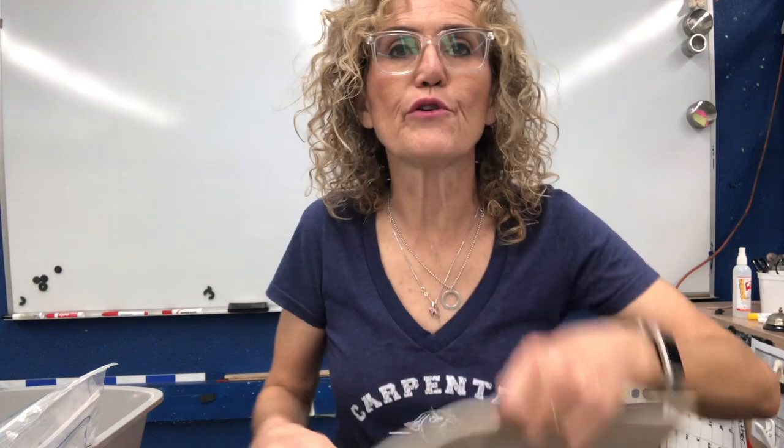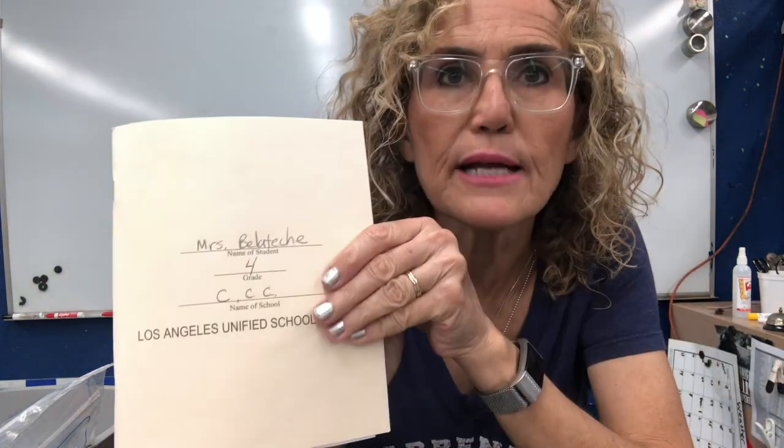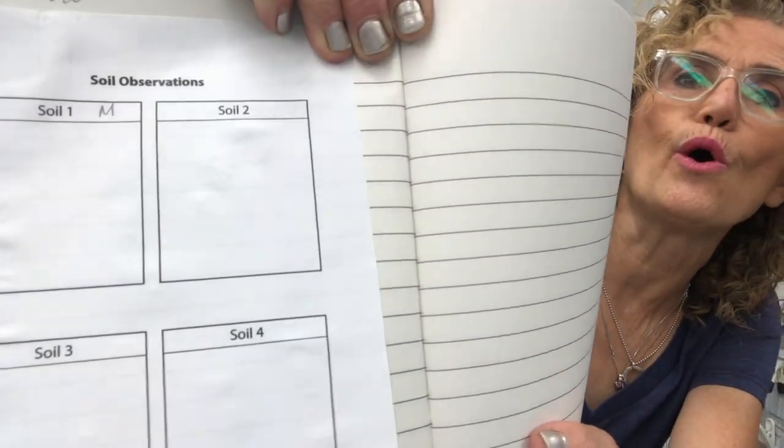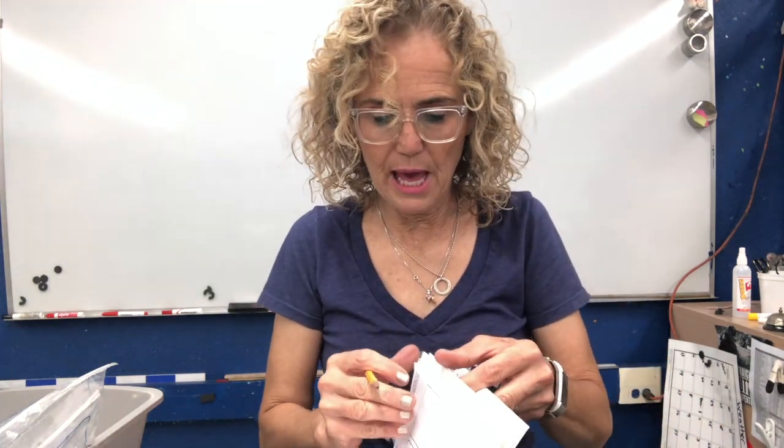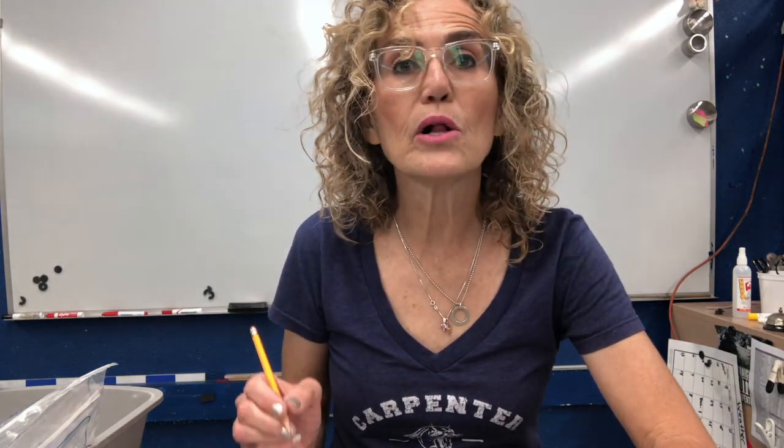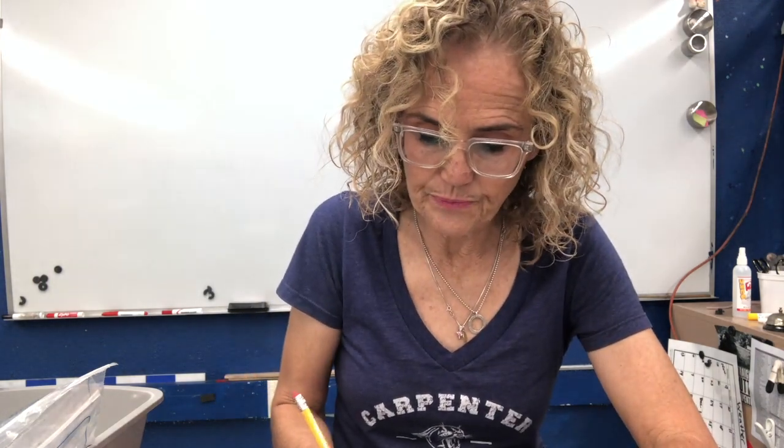Before we move any further, I would like us to get out our science notebook. We're going to glue this page in — it's called Soil Observations. Glue that in, make sure you put the date, and number the page. Mine is on page 18. I'm going to go back to the table of contents and put '9 Soil Observations' and the page number, 18. You might have a different page number.